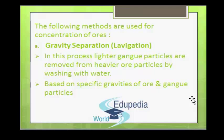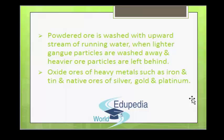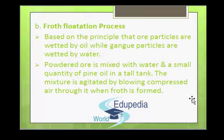The first method is gravity separation or levigation. The process by which the lighter gangue particles are removed from the heavier ore particles by washing with water is called levigation or hydraulic washing. The process is based on the specific gravities of ore and gangue particles. The powdered ore is washed with an upward stream of running water; the lighter gangue particles are washed away and the heavier ore particles are left behind. This process is employed for oxide ores of heavy metals such as iron and tin, and native ores of silver, gold and platinum.